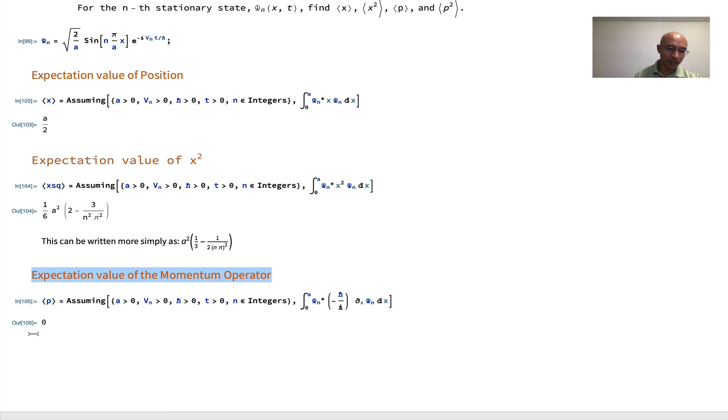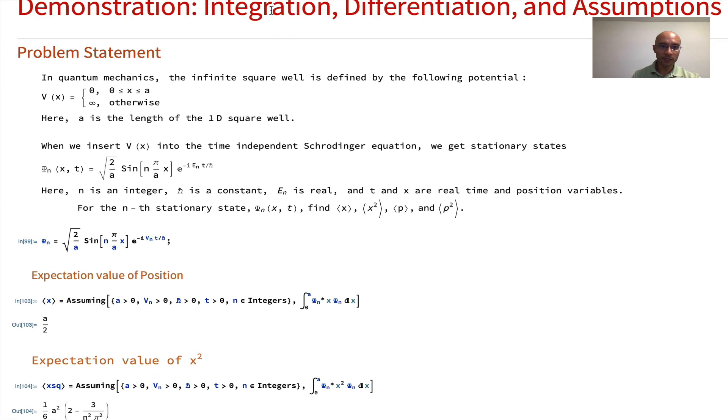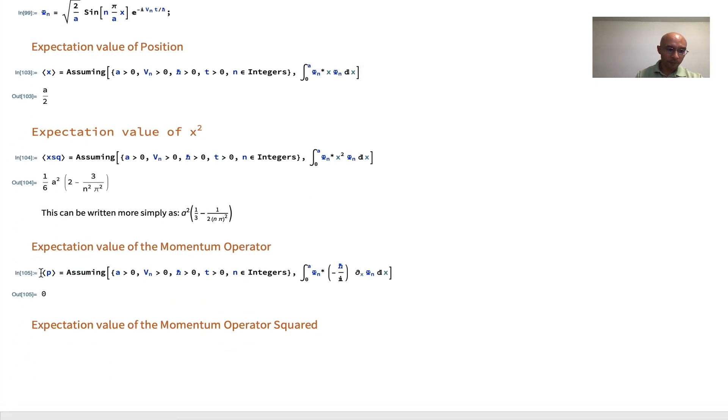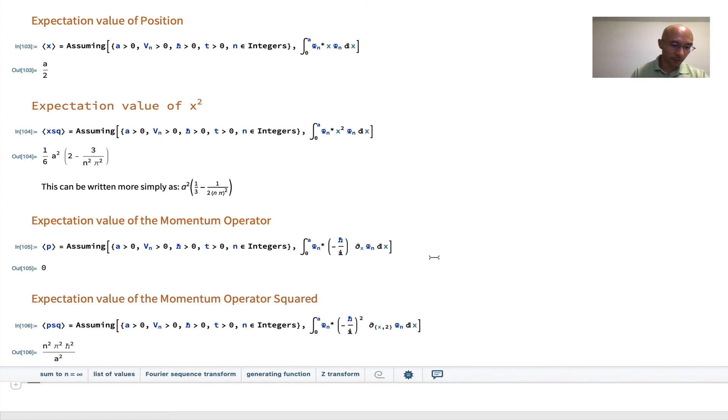And then expectation value for the momentum operator squared. I'm making this a subsection. I'm going to do a similar thing here: psq. And then here, I need to square my factor. And then instead of the partial derivative with respect to x, I'm going to replace the x by these braces and make a list. The list is x, because I'm taking the derivative with respect to x, but 2, because I want the second derivative with respect to x. I can evaluate this, and I get a nice result.